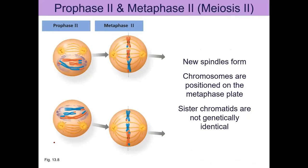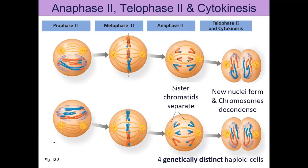Meiosis II is very similar to mitosis. Now that we've gotten those homologous chromosomes out of the way, in prophase II it depends on whether the chromosomes need to re-thicken, but in many cases they don't. Really, new spindle fibers forming is one of the main things that happens. The spindle fibers attach to the centromeres and chromosomes line up in metaphase II. Then the sister chromatids separate in anaphase II, and finally in telophase II we get a new nuclear membrane.